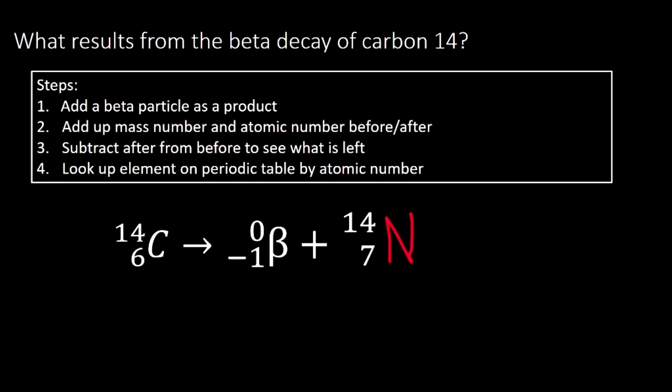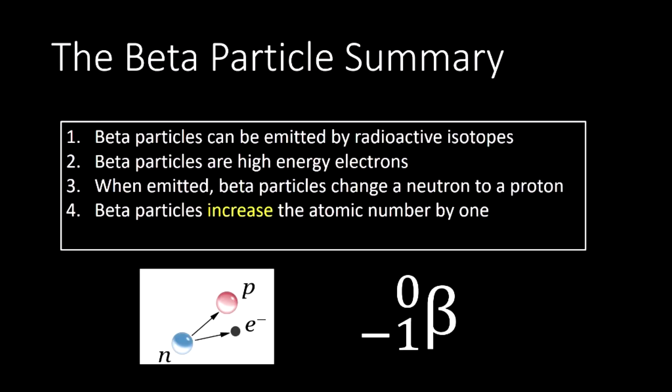Let's sum up. Beta particles can be emitted by radioactive isotopes, that is unstable nuclei. Beta particles are just high energy electrons. When emitted, beta particles change a neutron into a proton. Or another way to put that is, a neutron undergoes a decay and becomes a proton, and shoots out our beta particle. A good summary to remember is that beta particles increase the atomic number by one.